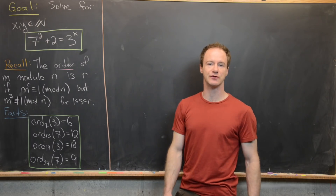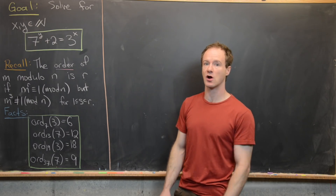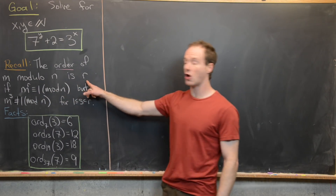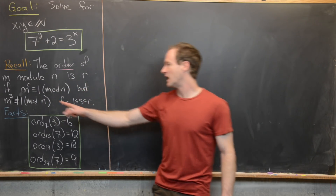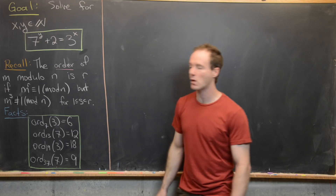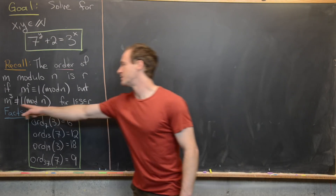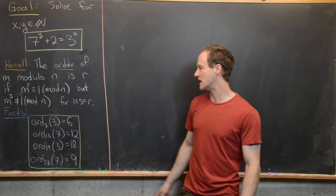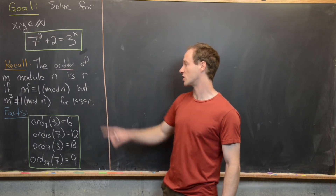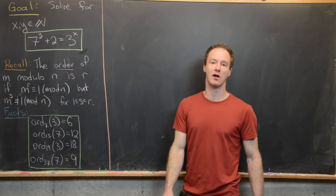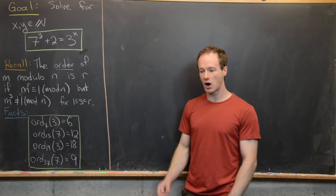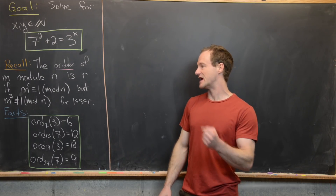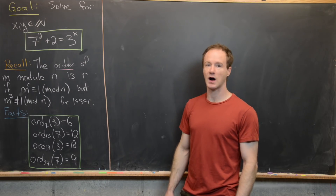We're going to use this notion of order, so let's recall that. The order of m modulo n is r if m to the r is congruent to 1 mod n, but m to the s is not congruent to 1 mod n for all s strictly smaller than r. In other words, r is the smallest number such that m to the r is congruent to 1 mod n.